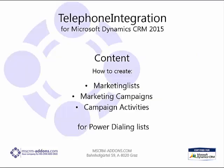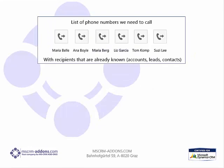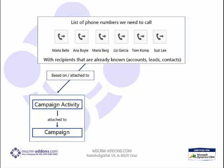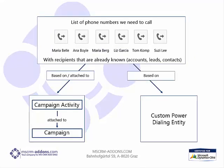In general, there are two different possibilities – via campaign activities or via custom power dialing entity. In both cases, it is crucial that a phone number is provided.